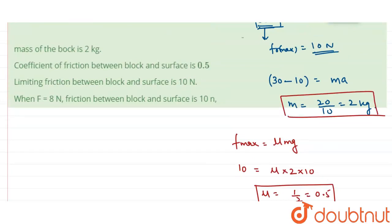Checking the options: the first option says mass is 2 kilogram — this is correct. The second option says coefficient of friction is 0.5 — this is also correct. The third option says limiting friction between block and surface is 10 newton. Limiting friction is the maximum friction when the body doesn't move, which is 10 newton — so this is also correct.